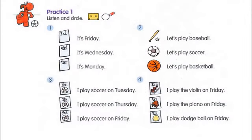Page 11. Practice 1. Listen and circle. Number 1: What day is it today? It's Wednesday. Number 2: It's Sunday. Let's play basketball. Number 3: What do you do on Tuesday? I play soccer on Tuesday. Number 4: What do you do on Friday? I play piano on Friday.